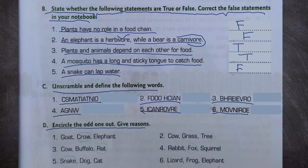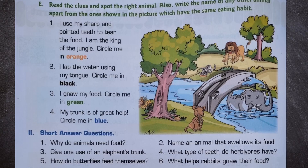Encircle the odd one out and give a reason. First — goat, crow, elephant: crow is the odd one out because goat and elephant are herbivores whereas crow is an omnivore; also crow is a bird. Second — cow, grass, tree: cow is the odd one out because it eats grass and tree. Third — cow, buffalo, rat: rat is the odd one out because cow and buffalo chew the curd while rat gnaws its food. Fourth — rabbit, fox, squirrel: fox is the odd one out because rabbit and squirrel gnaw their food whereas fox tears and chews. Fifth — snake, dog, cat: snake is the odd one out because it swallows food whole while dog and cat lap. Sixth — lizard, frog, elephant: elephant is the odd one out because lizard and frog have long sticky tongues.